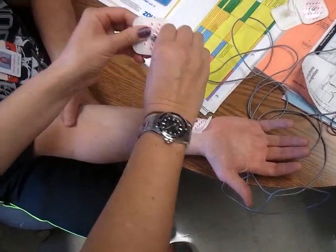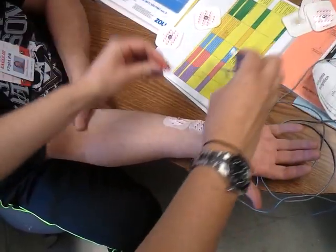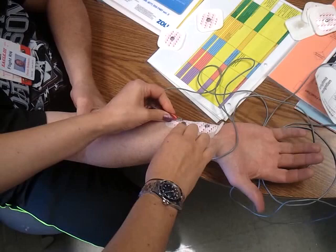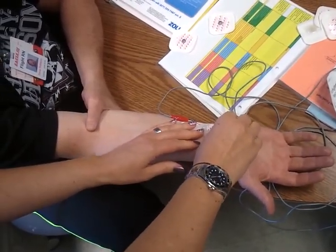And the electrodes. If you can remember, red is closest to the heart. Okay, so red goes here. And then black.